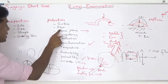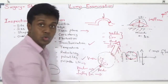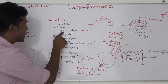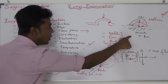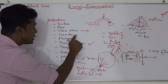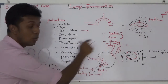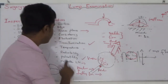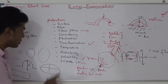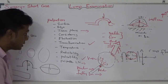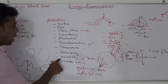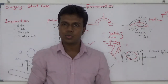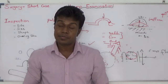To summarize palpation: surface - smooth or rough; edges - ill-defined or well-defined; tissue plane - attached to skin, bone, or underlying muscles; consistency - soft, firm, or hard; fluctuation and cross-fluctuation, and whether it is trans-illuminant; temperature; reducibility; pulsatile action; and lymph node assessment. That is how you are going to examine your patient's lump.